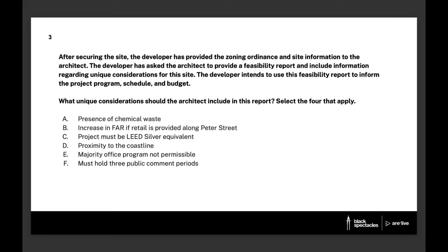For question three and on, we'll try to talk through the thought process before giving the answers. Question three: After securing the site, the developer has provided the zoning ordinance and site information to the architect and asked for a feasibility report including information regarding unique considerations for the site. The developer intends to use this to inform the project program, schedule, and budget. What unique considerations should the architect include? Select the four that apply. Options are: presence of chemical waste; increase in FAR if retail is provided along Peter Street; project must be LEED silver equivalent; proximity to the coastline; majority office program not permissible; or must hold three public comment periods.